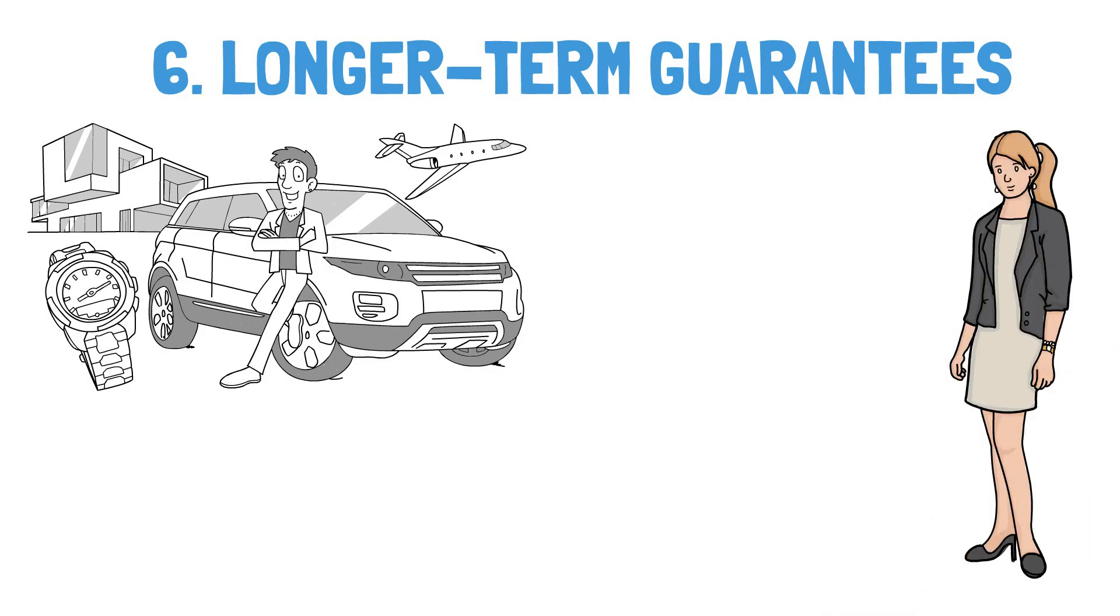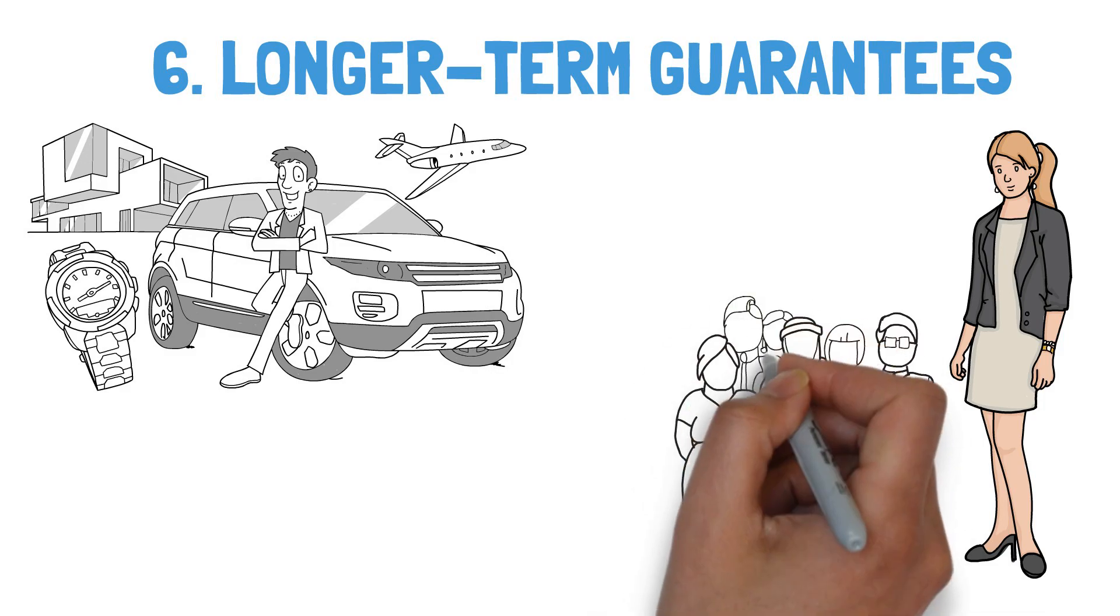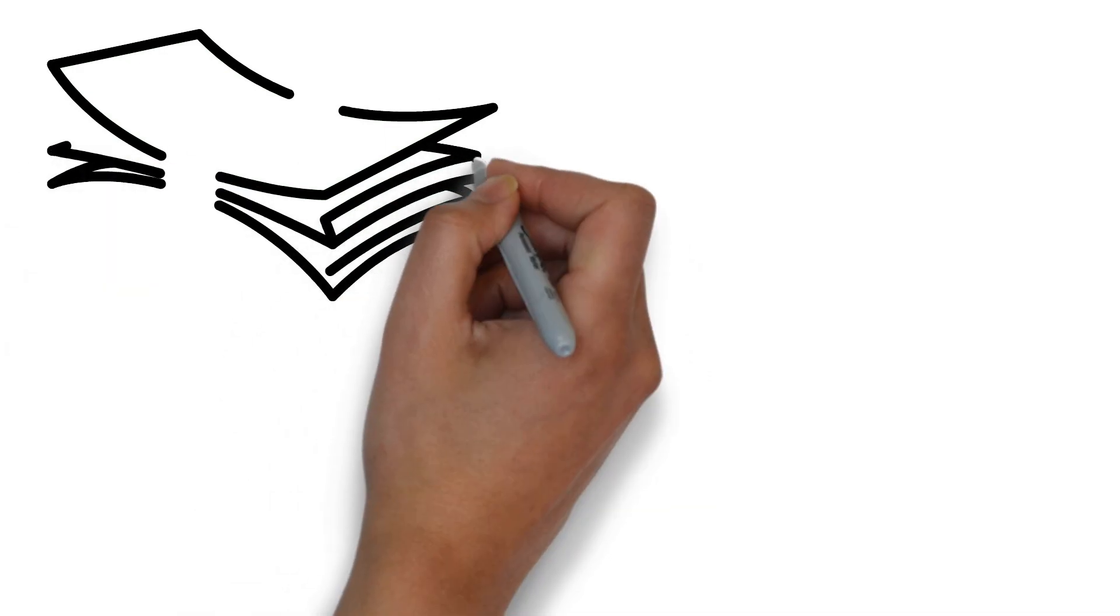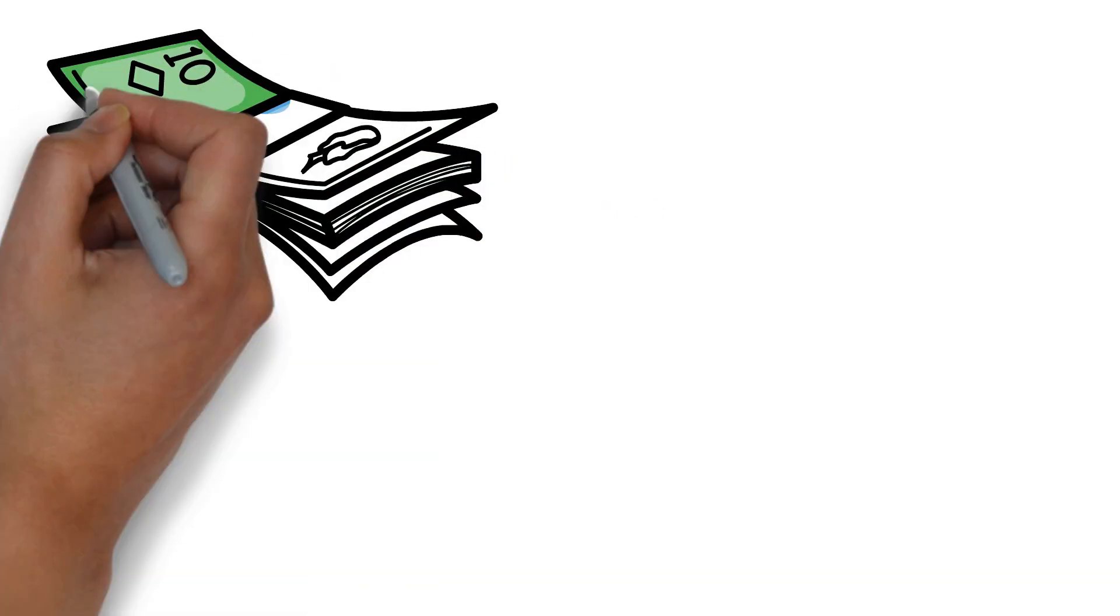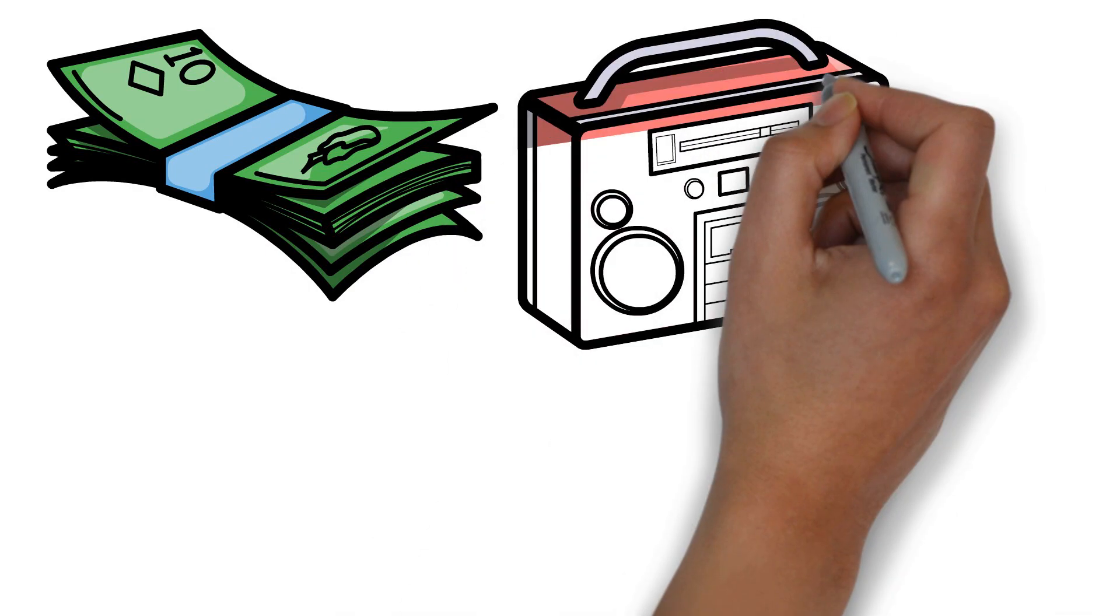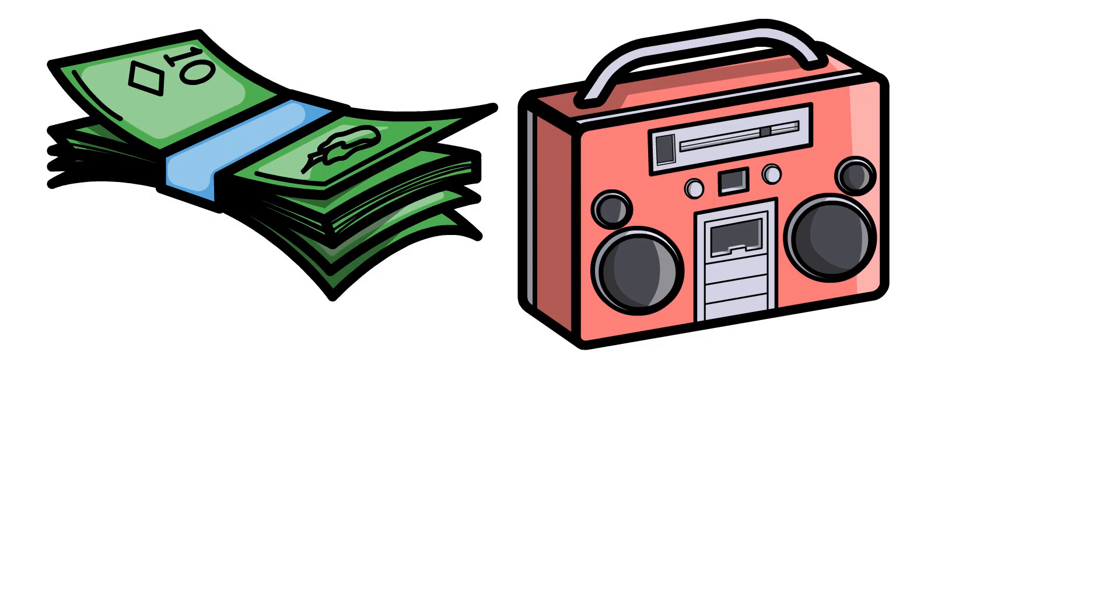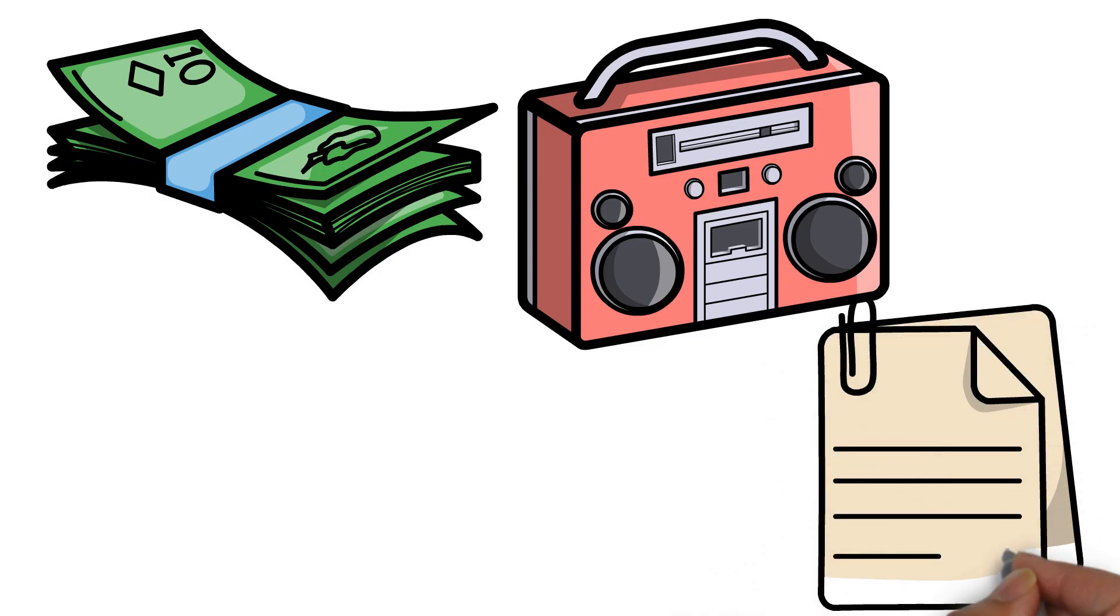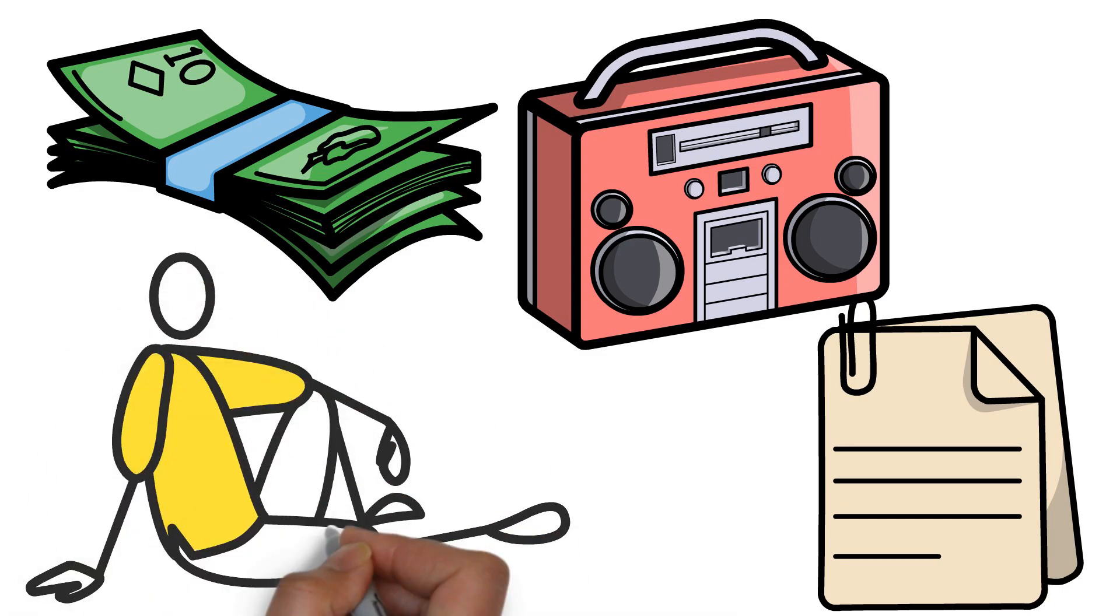Those with greater disposable income may want to invest in sturdier, more reliable items. Since consumers may already consider the goods to be trustworthy, they may not see the value in shelling out more cash for an extended warranty. If anything goes wrong with an expensive item, wealthy individuals may be able to afford the expense of repairs. It's possible that without an extended warranty, they won't feel the need to prepare financially for the possibility of costly repairs.